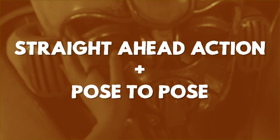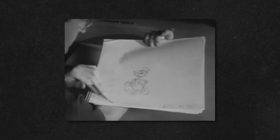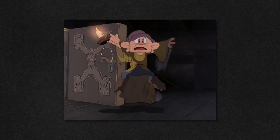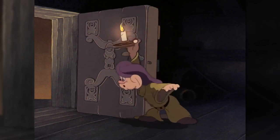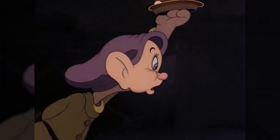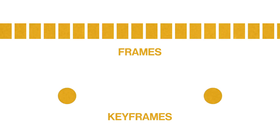Next, there's straight ahead action and pose to pose — two different approaches to animation. Straight ahead refers to drawing one frame, then the next, keeping things spontaneous and fresh. However, that's not really how Bumblebee was animated. In CG animation software, instead of frames there are keyframes — markers for each start and end point of a movement — and after the keyframes are marked, the computer fills in the rest in between. So Bumblebee isn't straight ahead, it's pose to pose.